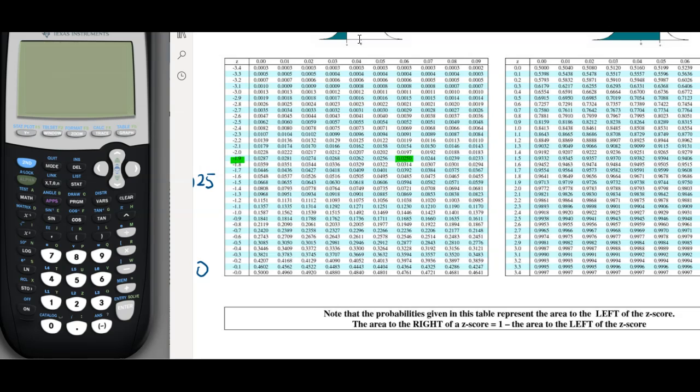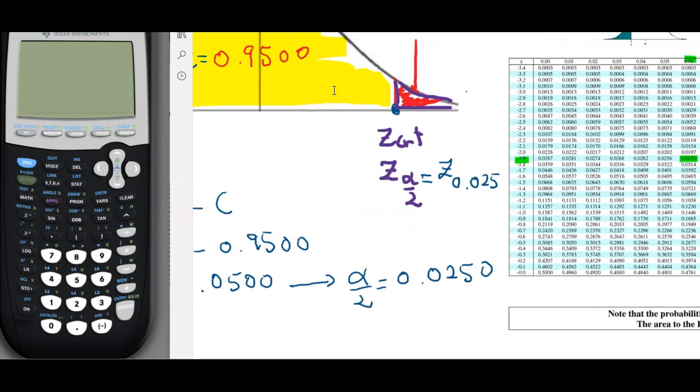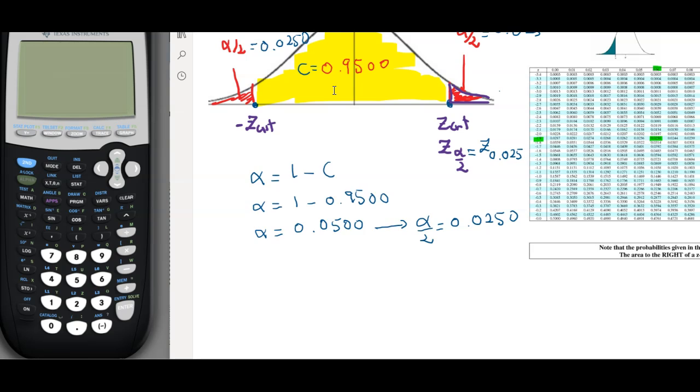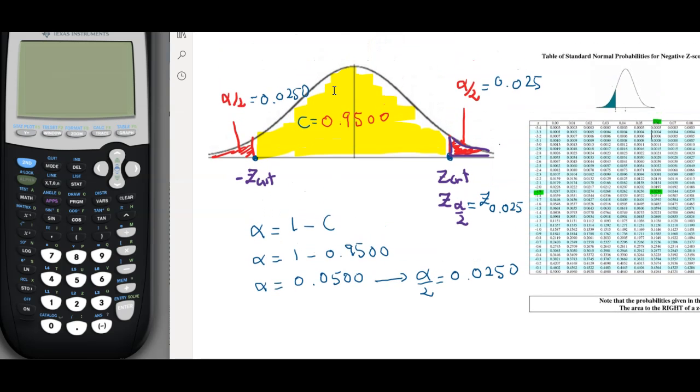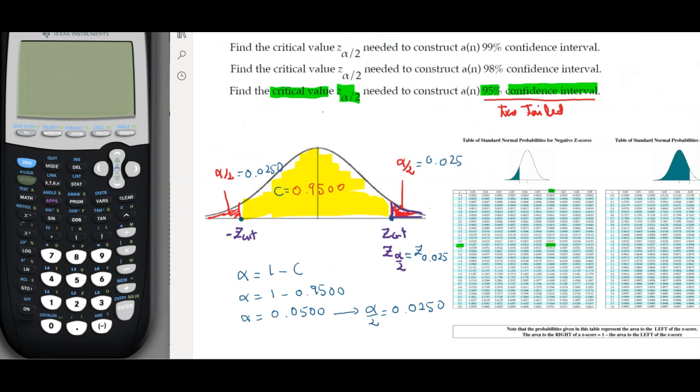We can use this chart here. The value 0.0250 is going to be right here, and if we read it we get minus 1.96. Going back, the value we just found is minus 1.96. Therefore by symmetry, the other value will be 1.96, and that's how we find it.